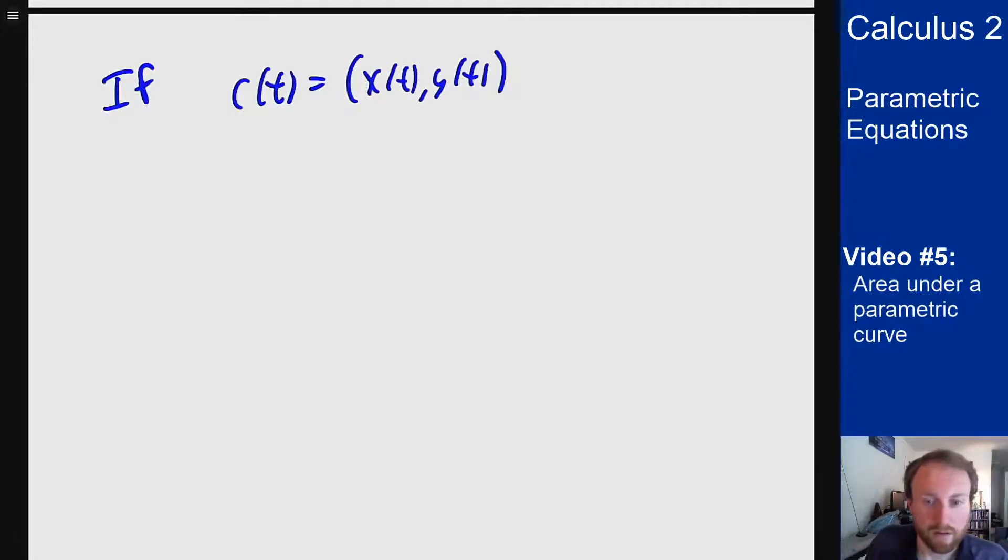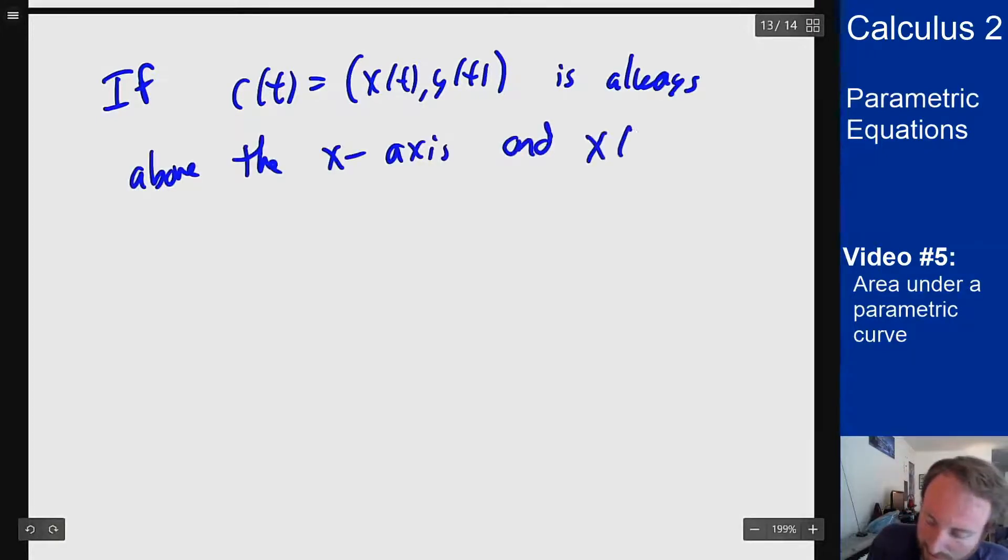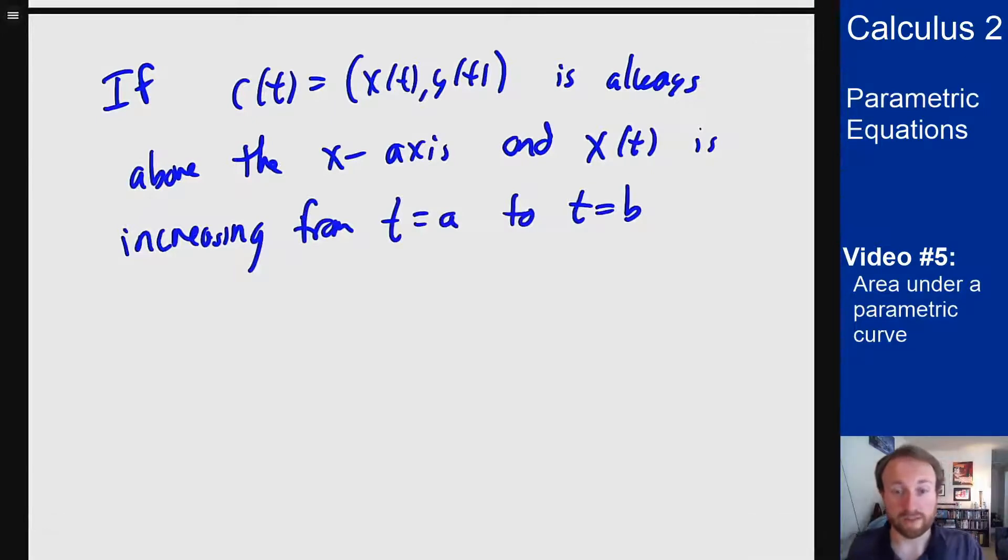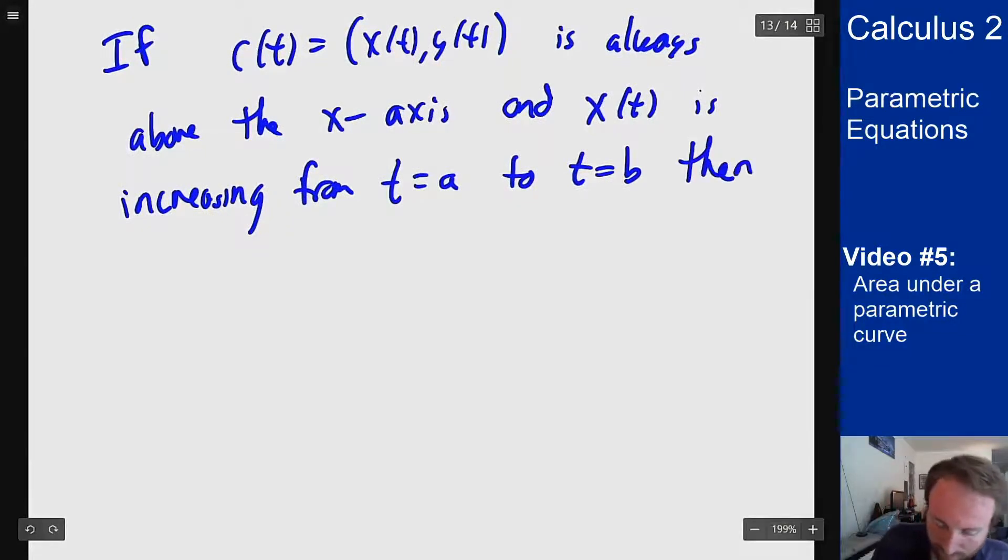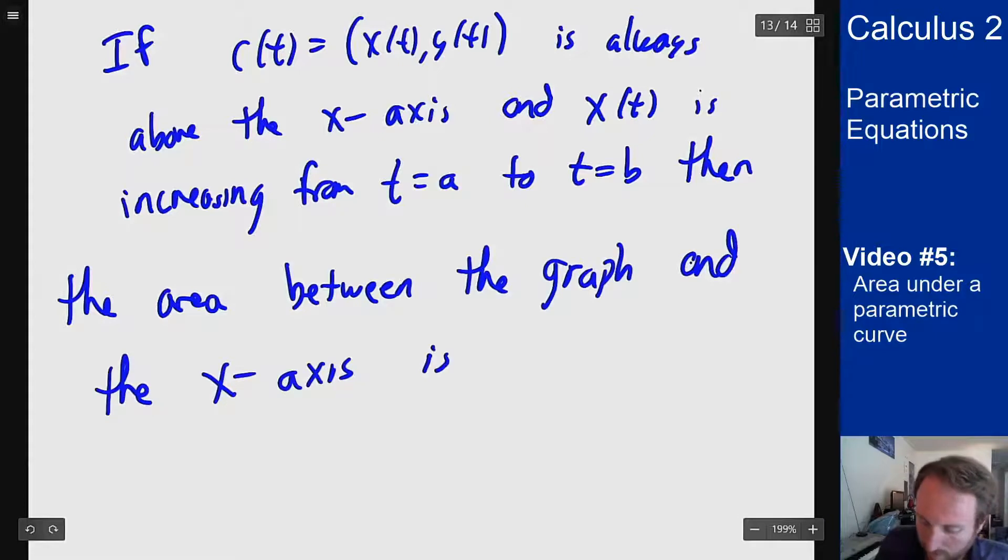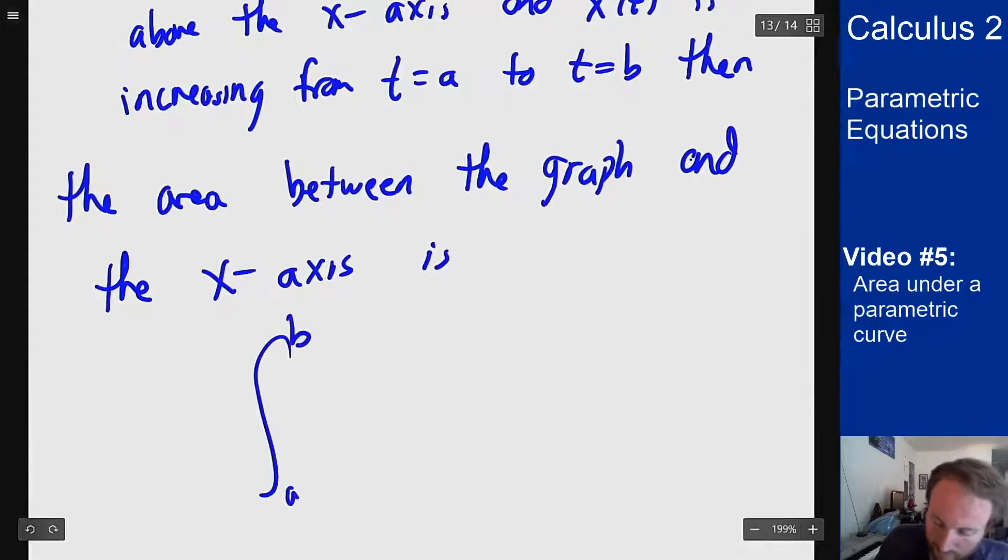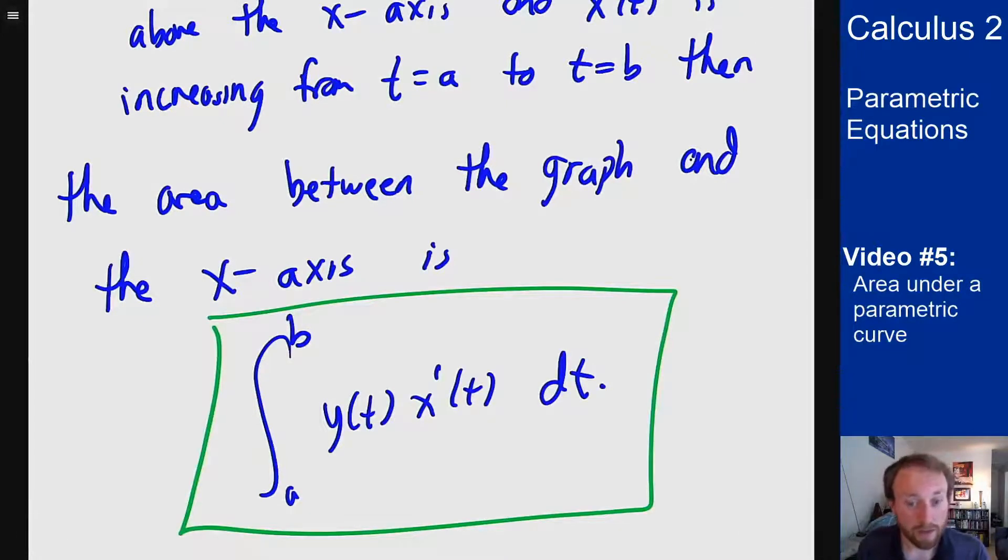So the result I get here is the following: If the curve c of t, which is just x of t, y of t, is always above the x-axis and x of t is increasing from t equals a to t equals b. The point is to make sure I'm always going forward in this problem. If I end up backtracking at all I get some weird cancellation I want to be careful of. So as long as I only go forward the entire way, then the area between the graph and the x-axis is the integral from a to b of y of t times x prime of t dt. And that's how we can find areas of regions that are bounded by parametric curves.